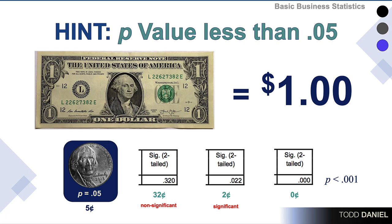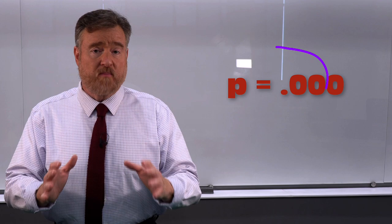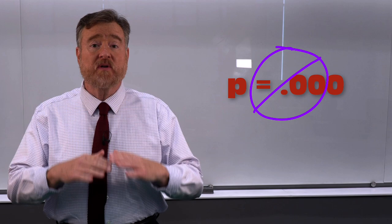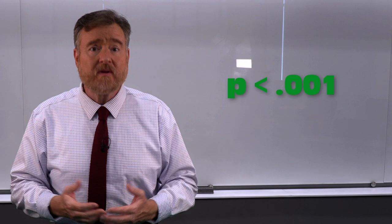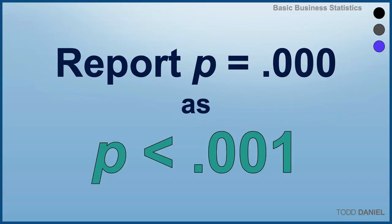If the significance value is 0.000, make it 0 cents — less than a nickel — but report it as p less than 0.001. You should never report a probability as 0, because that would suggest the probability is a true zero or impossible. This probability is not impossible, it's just very small and highly unlikely. Always report small probabilities as p less than 0.001.